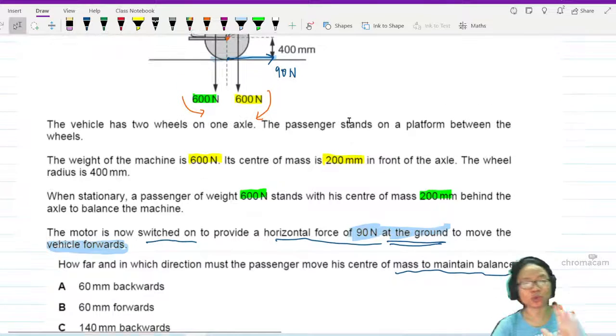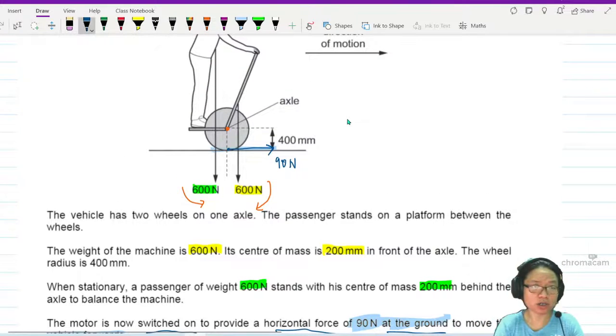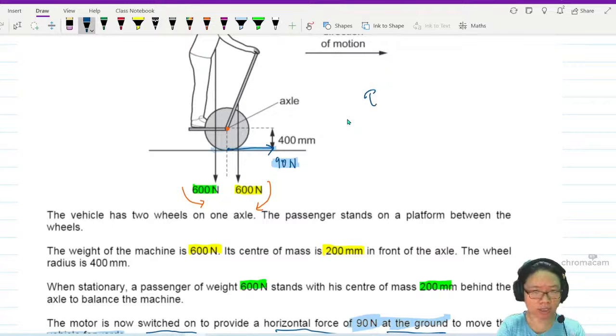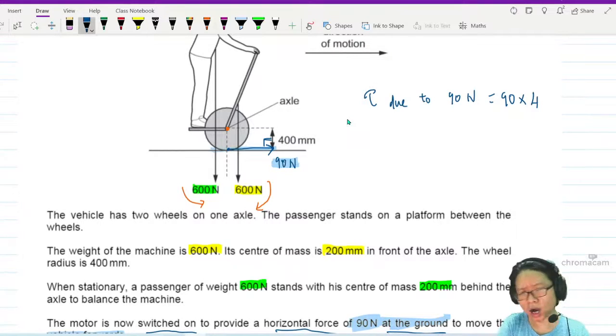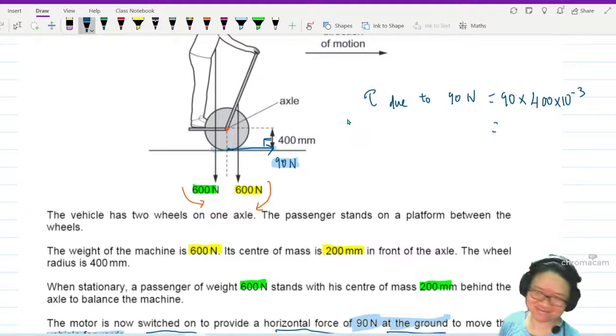So the reason why we got out of balance - initially we were balanced, we were happy, we were chilled. But now we are out of balance because of this extra 90 Newton. So I want to find the torque due to 90 Newton and counterbalance it to the 90 Newton.